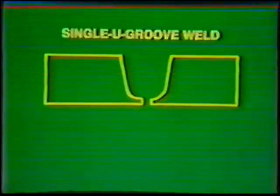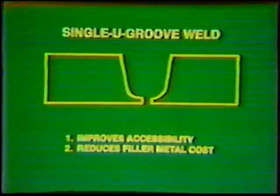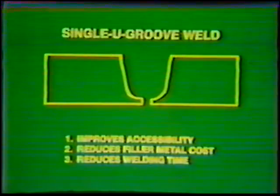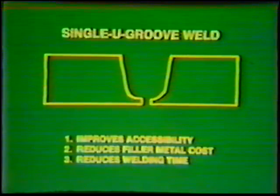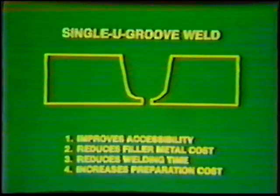In some cases, a radius is placed on the edges of thicker members to be joined. This is commonly called a single U-groove weld. The U-groove provides better accessibility to the root while reducing the rate of filler metal consumption and welding time as compared to single V-grooves. The cost of preparation, however, is higher on these types of joints, since the edges normally have to be prepared by machining.